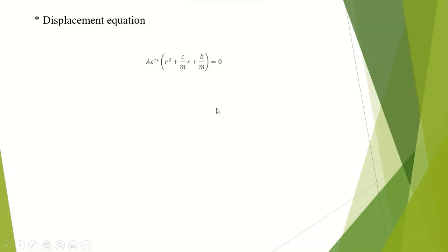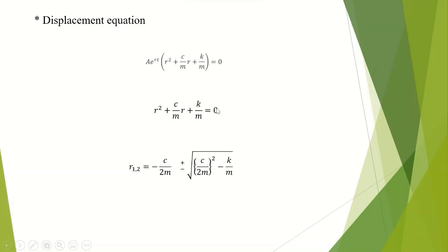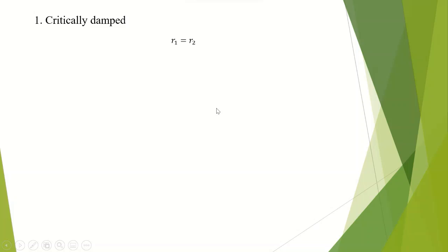This equation has a solution of the form A times e to the power of RT. Since A cannot be equal to zero, the part inside the bracket must equal zero. There are two roots, R1 and R2, whose values are given by the corresponding equations. Depending on the values of these roots, we have three solutions.